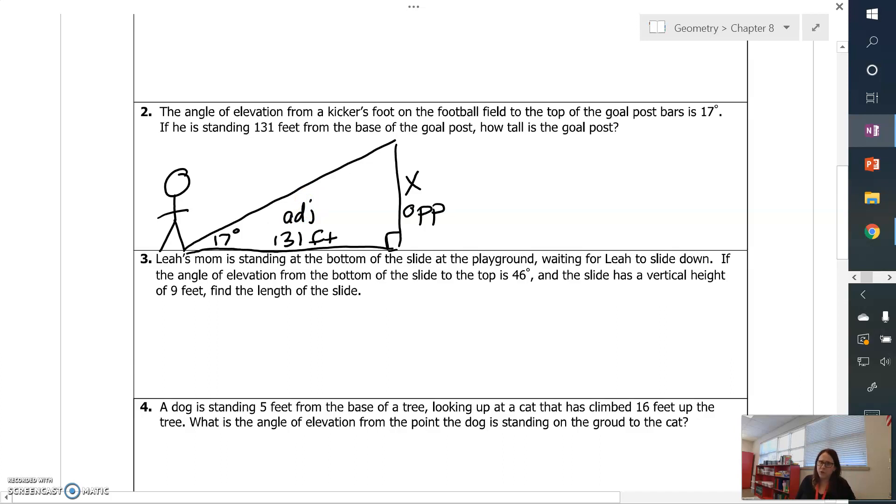So I'm going to choose tangent because I have opposite over adjacent. So tangent of 17 is going to equal X over 131. And then to solve for X, I multiply both sides by 131. So I'm going to get X equals 131 times the tangent of 17. Punch that into your calculator.